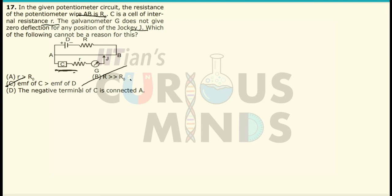The negative terminal of C is connected to A. Yes, correct. The D answer is also correct because if the negative terminal is connected to A over here, I can say that virtually we can obtain the length behind this wire, not in front of this wire, but behind this wire. So there will be no null point obtained.